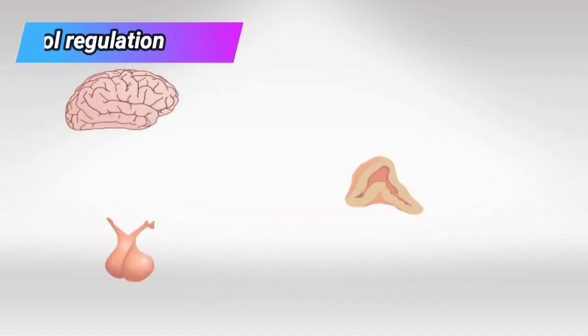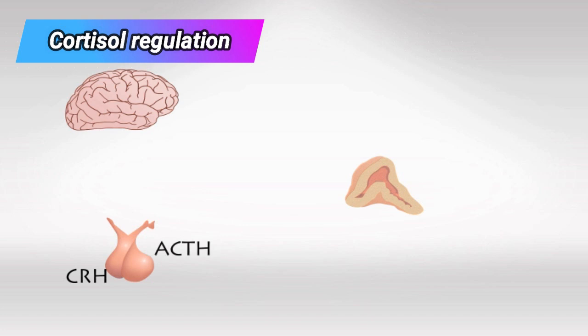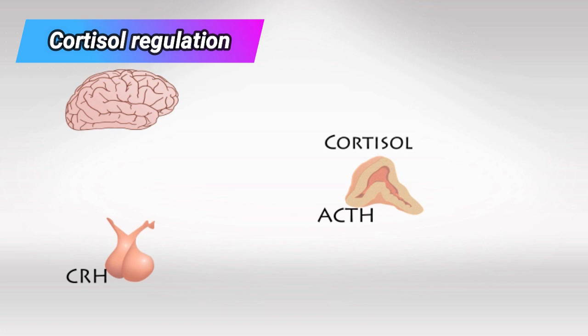The regulation of cortisol is very important. We have two main steps required to release cortisol from the adrenal gland. First, CRH, or corticotropin-releasing hormone, must be released from the hypothalamus to the anterior pituitary gland. Then the anterior pituitary secretes ACTH, which travels all the way down to the adrenal gland and stimulates the secretion of cortisol.